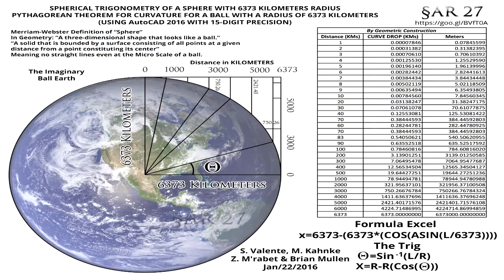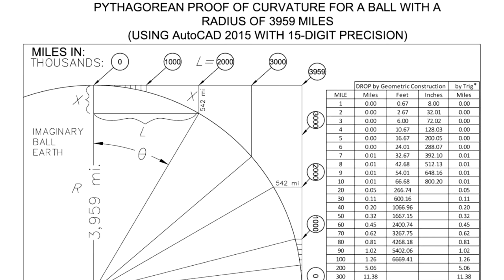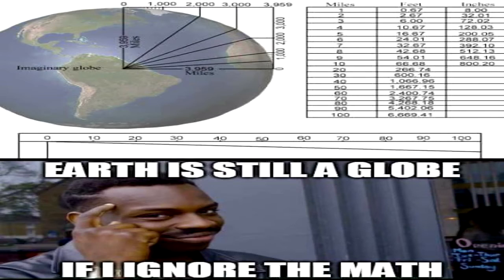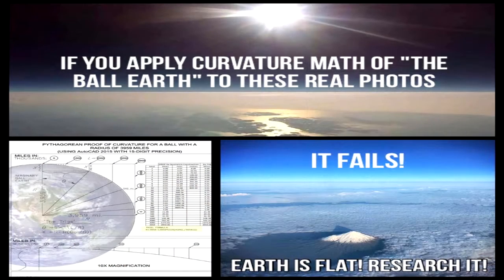Based on the curvature math for a globe of given proportions, a small amount of curve should already be visible to the naked eye, even at sea level. After just one mile, there would be 8 inches of curvature, increasing exponentially so that after 2 miles there would be 32 inches, and after 3 miles there would be an entire 72 inches of Earth's curvature necessarily visible on the horizon.